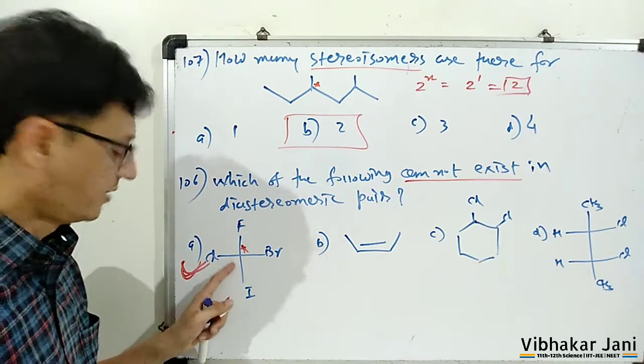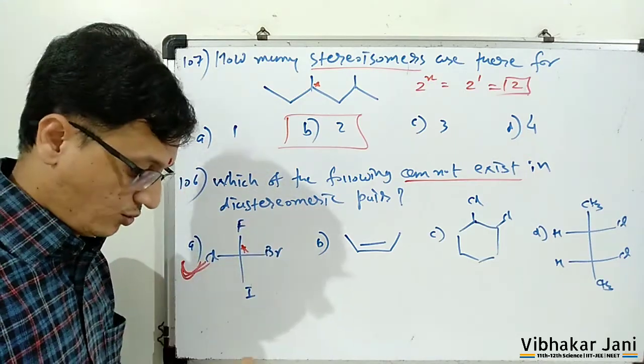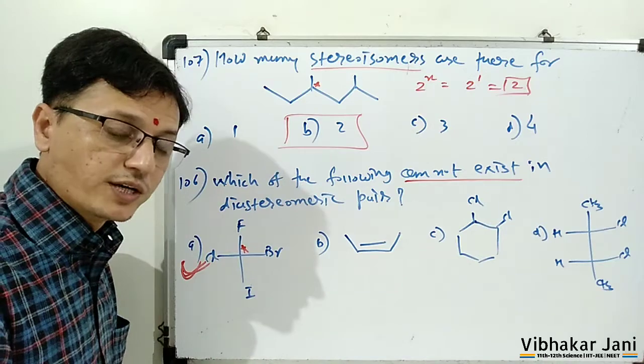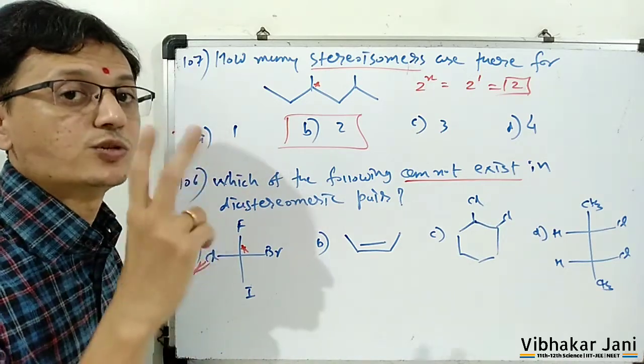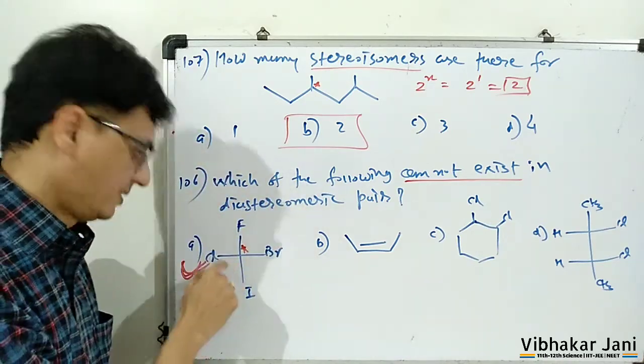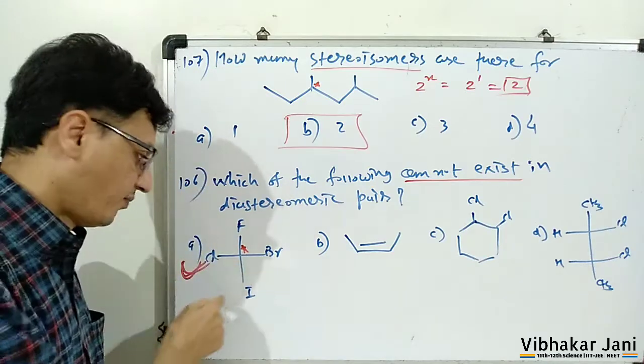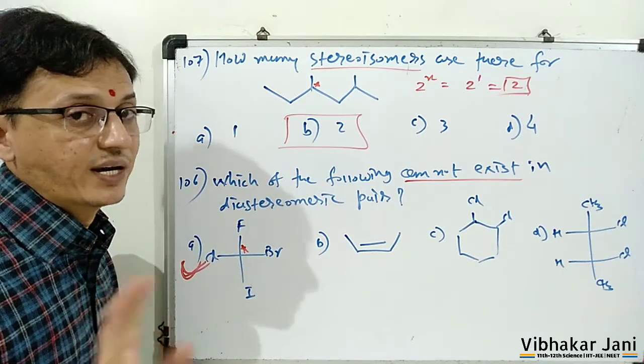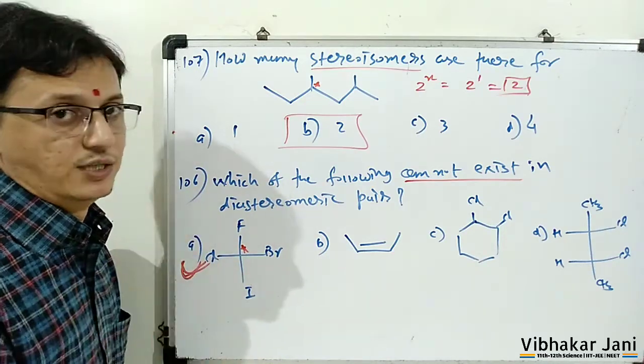Because it is having only one stereocenter. To be a diastereomer, a molecule must have at least two stereocenters. But here this is having only one, therefore this molecule cannot form any diastereomer.